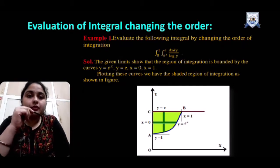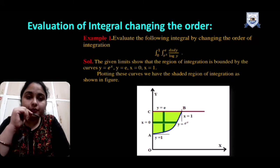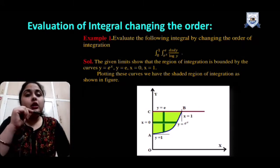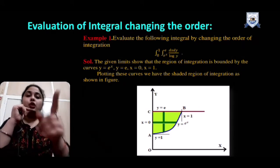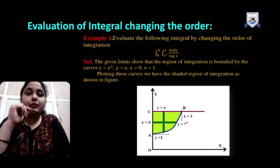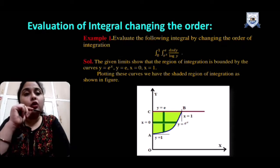Let us take an example: evaluate the following integral by changing the order of integration. As we can see, the limits of y are variable — they are in terms of x, i.e., functional limits of the form y = f(x). So these variable limits are assigned for y, and according to the question, we are supposed to integrate first with respect to y. However, integrating 1/log(y) with respect to y is a complicated case. If instead we integrate with respect to x first, then 1/log(y) will be treated as a constant, which is much easier.